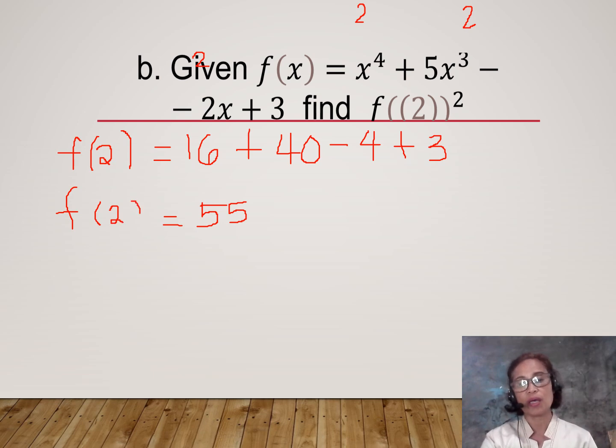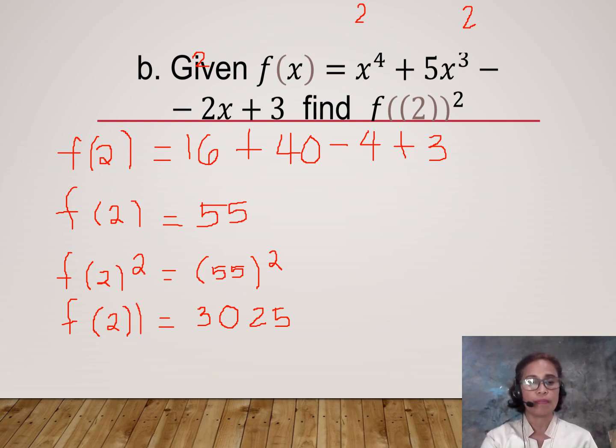But what we are solving is f(2) raised to the second power. So let us now solve for f(2) raised to the second power, which is 55 raised to the second power. In this case, I'm going to use a calculator and solve for 55 raised to the second power. 55 times 55 is equal to 3,025. So this is our f(2) raised to the second power.